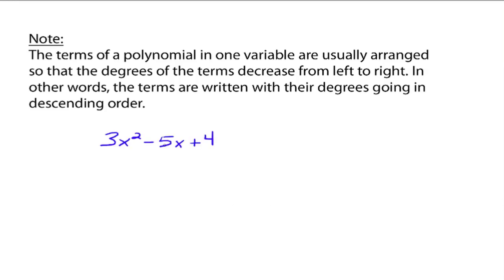For example, 3x squared, the degree for this monomial is 2, minus 5x, the degree of this monomial is 1, plus 4, and the degree of this monomial is 0. So the degrees 2, 1, 0 go in descending order. That's the preferred way that we write polynomials.